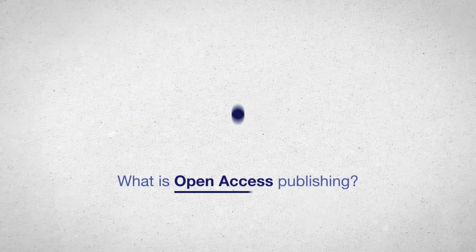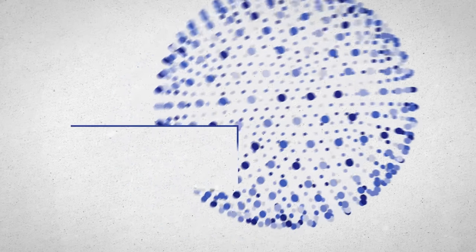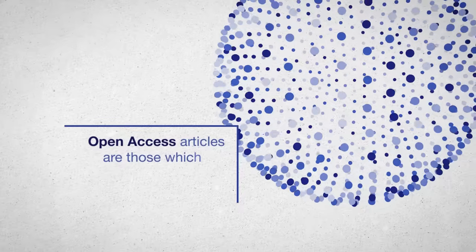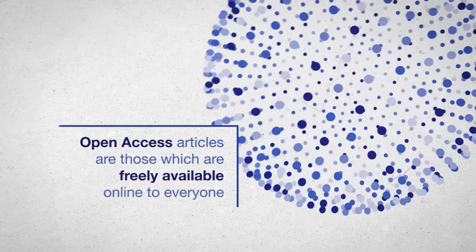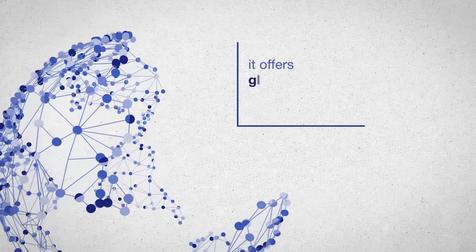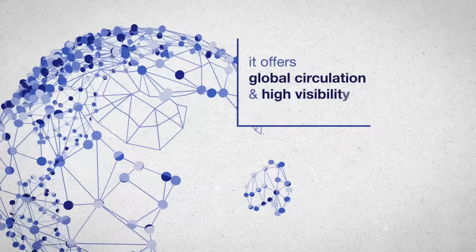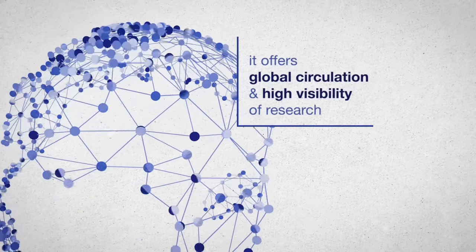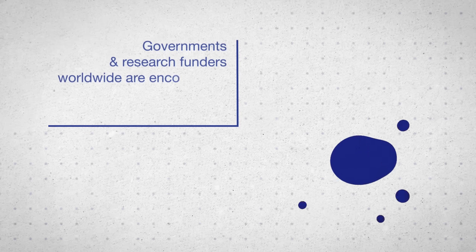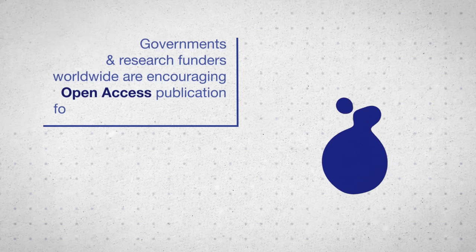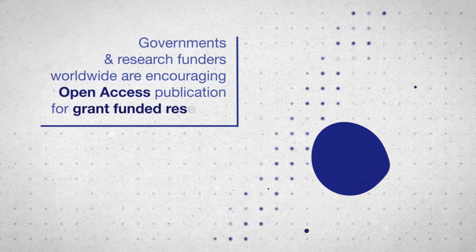What is open access publishing? Open access articles are those which are freely available online to everyone. It offers global circulation and high visibility of research. Governments and research funders worldwide are increasingly encouraging open access publication for grant-funded research.